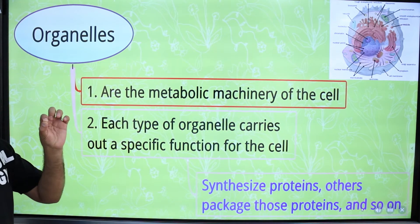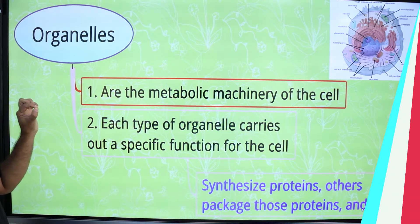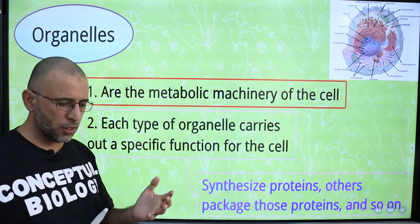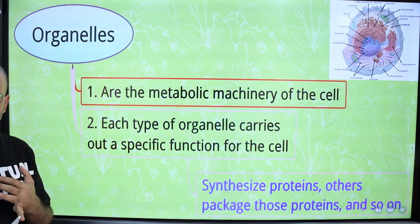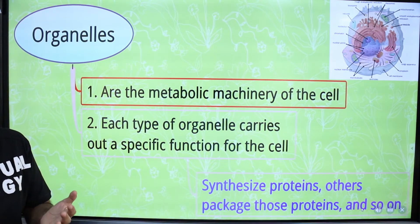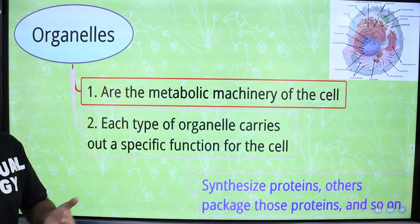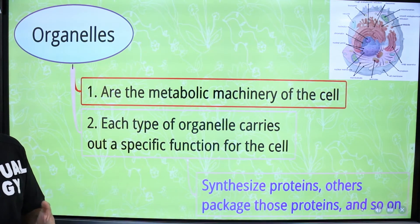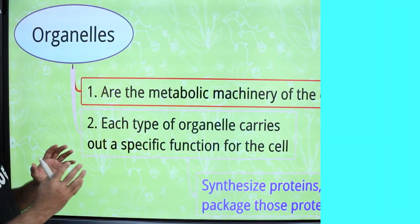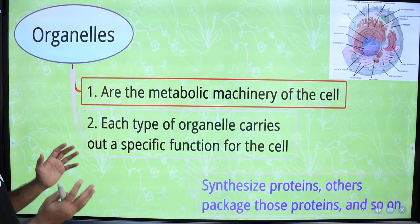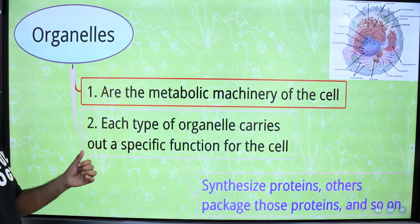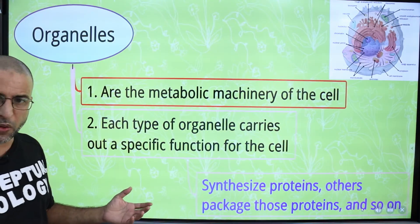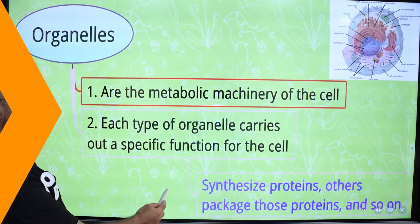Organelles are little organs present in the cytoplasm. They are metabolic machinery — for example, ribosomes are involved in protein synthesis and are protein factories; endoplasmic reticulum are membrane factories; and mitochondria is the powerhouse of the cell. Each type of organelle carries out a specific function.